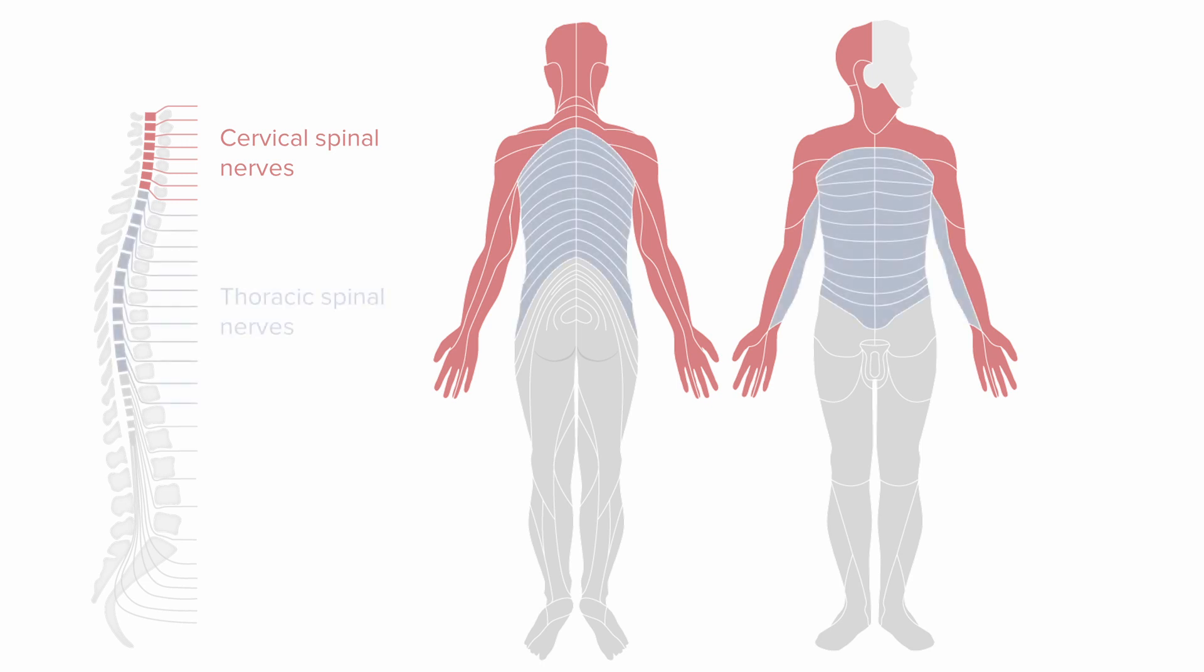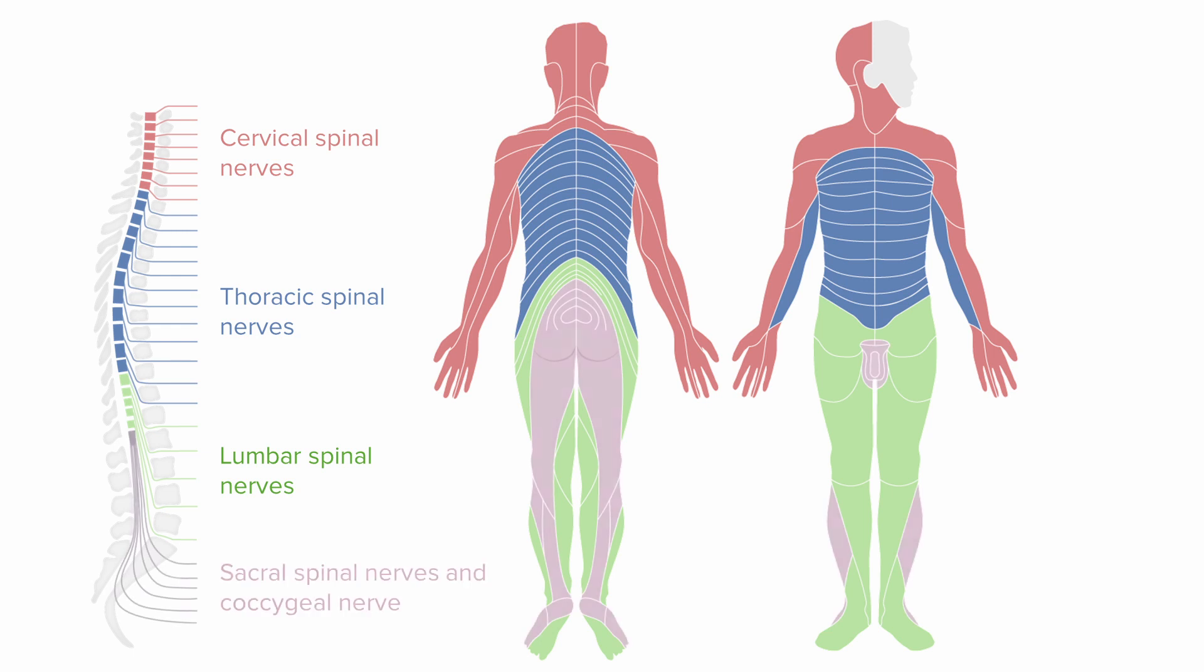Similarly, here we have the thoracic dermatome. So we see the areas innervated by thoracic spinal nerves. Then we see the lumbar spinal nerves and the sacral and coccygeal nerve.